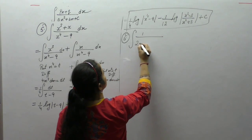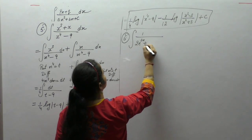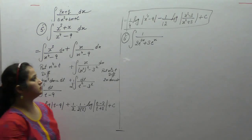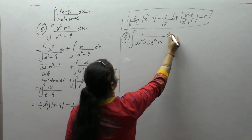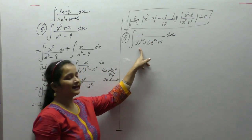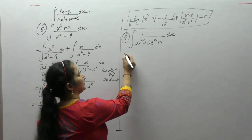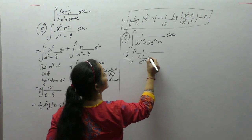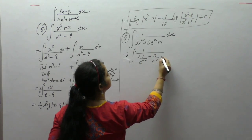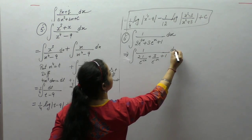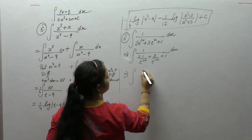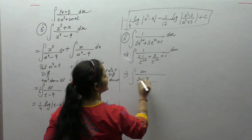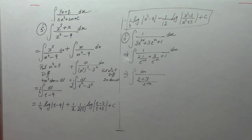We have 1 upon 2E^(2x) plus 3E^x plus 1. In the numerator we have 1, but we want the derivative of this term in the numerator. So we write E^(2x) as 1 upon E^(-2x). Now take E^(-2x) common, and take as LCM: 2 plus 3E^(-2x).